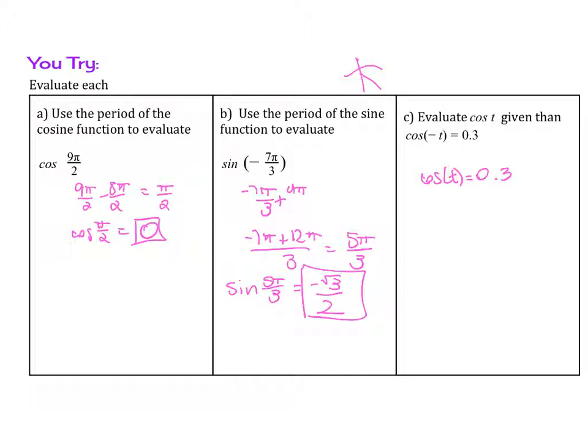For c, evaluate cosine t. Cosine is even, so that just means it's the same exact value. Cosine of t is still 0.3.